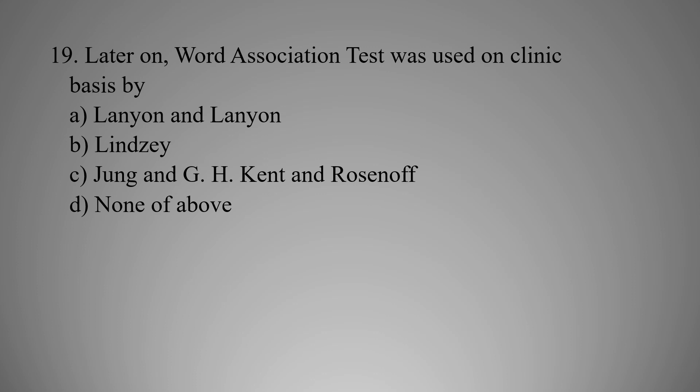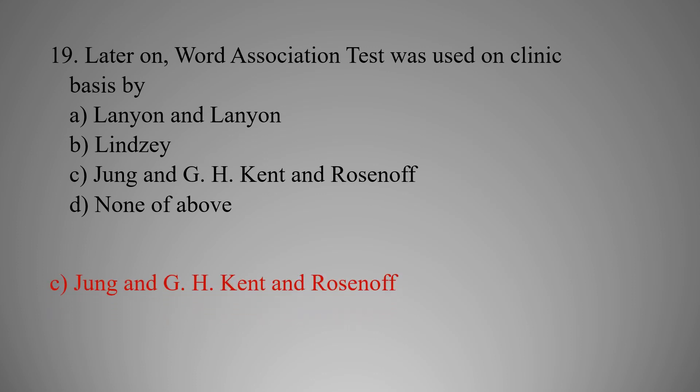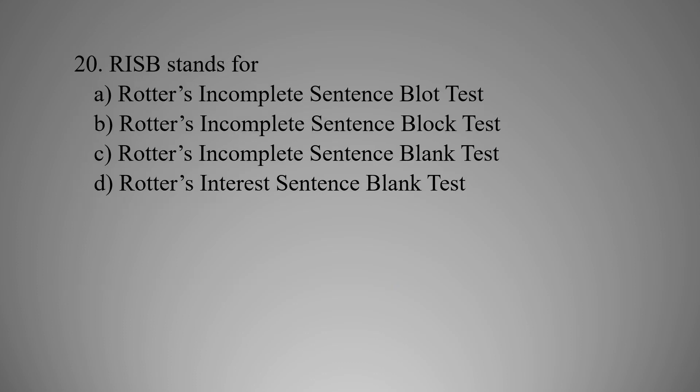MCQ number nineteen: Later on, the Word Association Test was used on a clinical basis by — Option A: Lennon and Lennon, Option B: Linzer, Option C: Jung and G.H. Kent and Rosanoff, Option D: None of the above. The right option is C — Jung and G.H. Kent and Rosanoff.